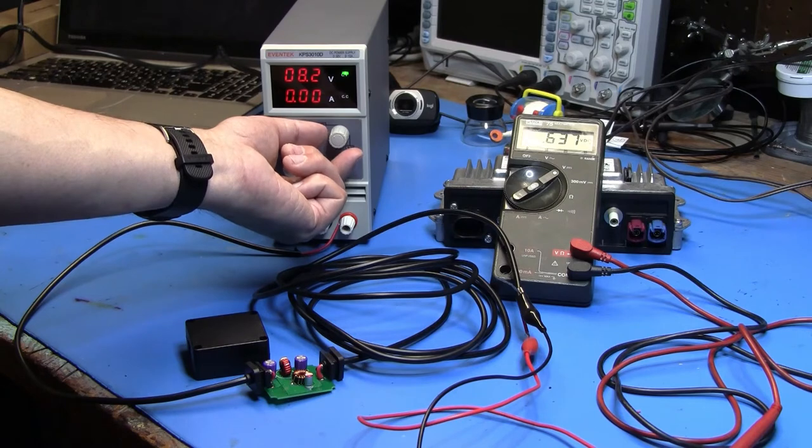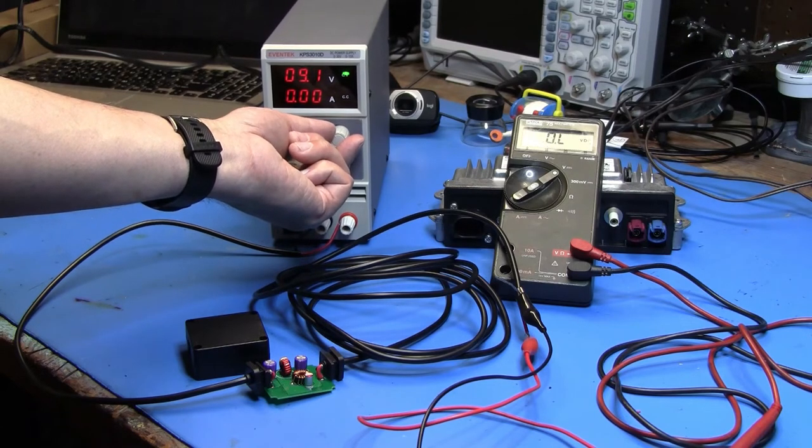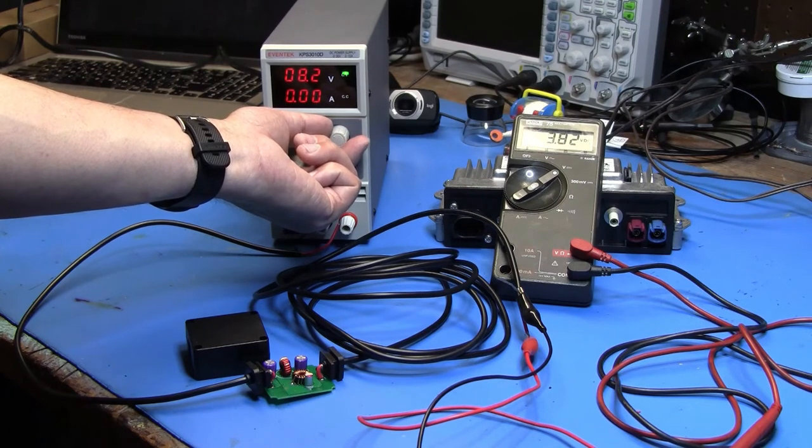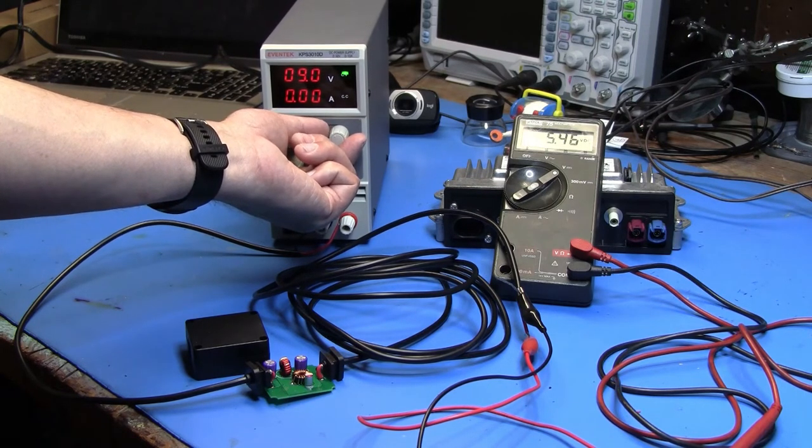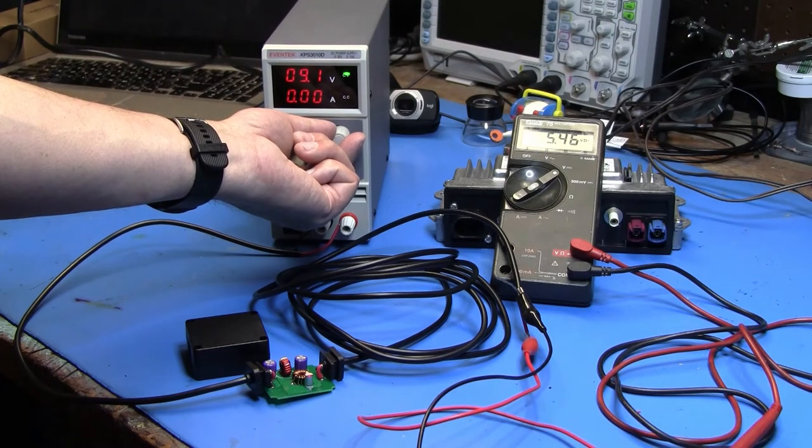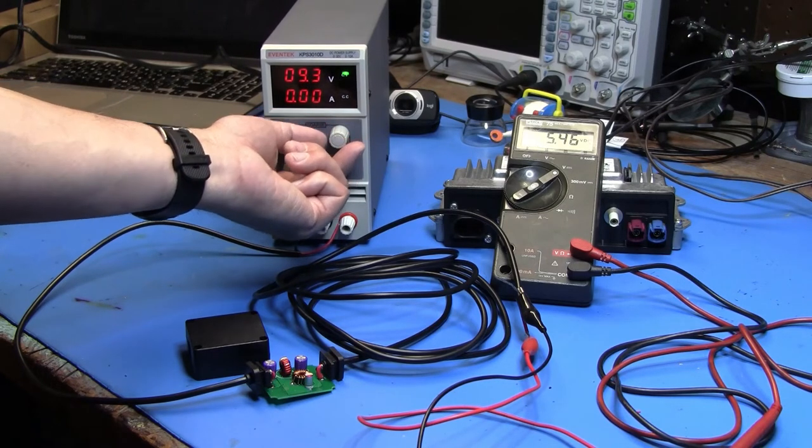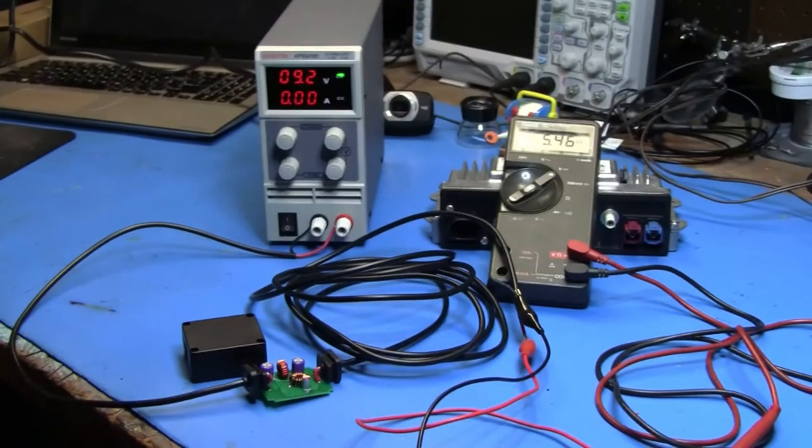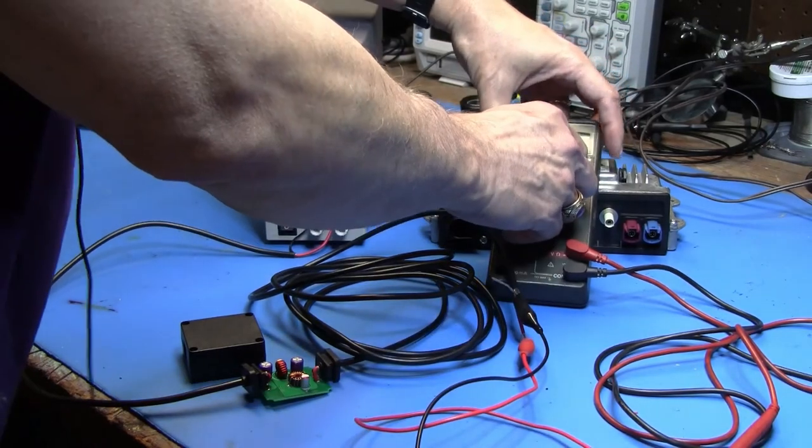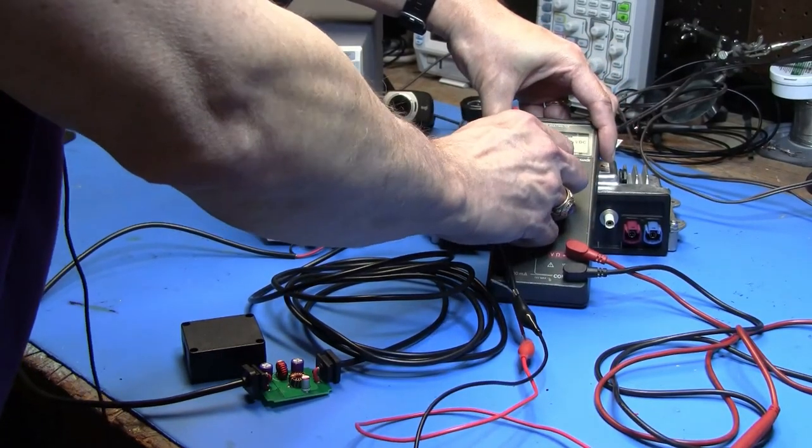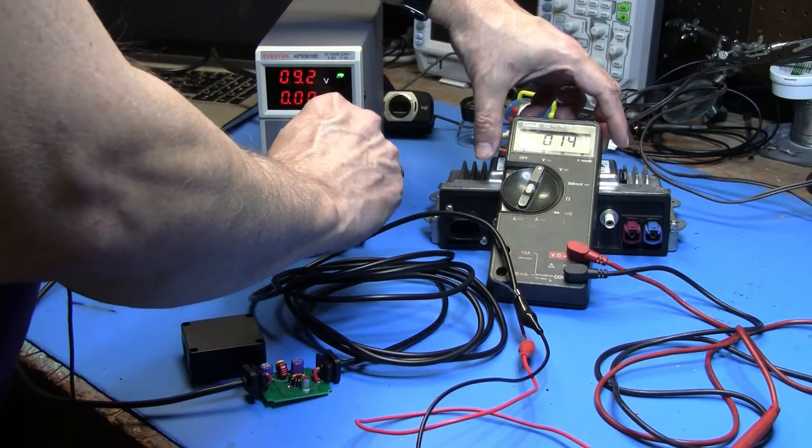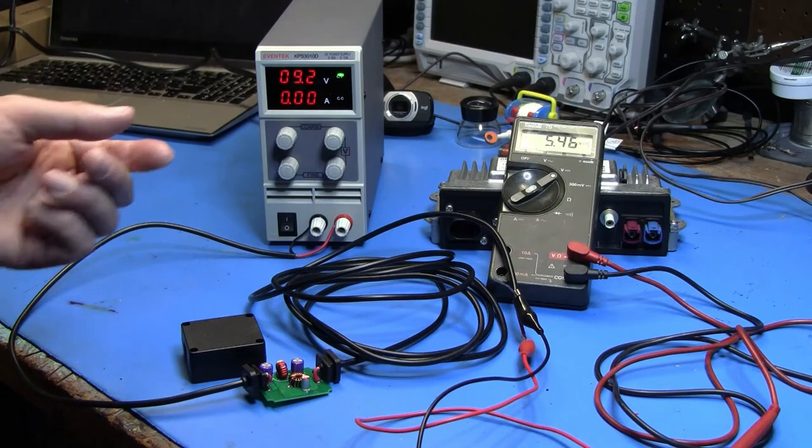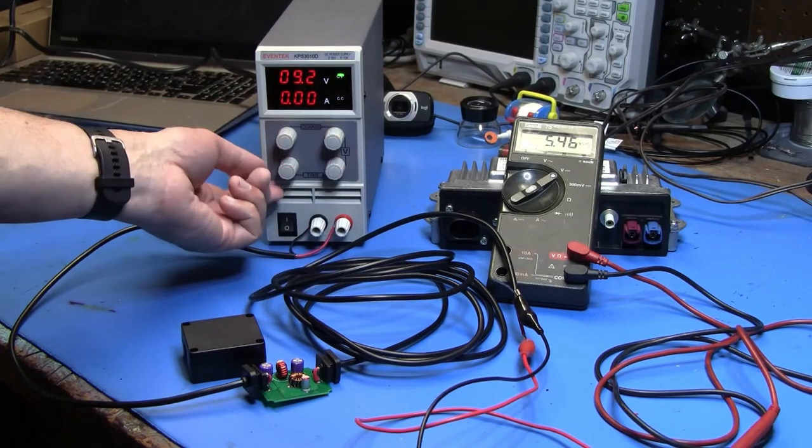So we'll go to 8 again. 9. Okay, so it looks like approximately 9 volts. We've got 5.46 volts coming out DC. I'm going to change it to AC setting real quick but I expect to see 0 there or some very small value of approximately 0. Okay.